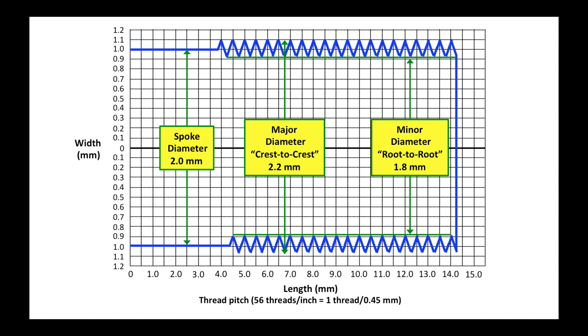The bottom axis, or the x-axis, is length in millimeters, and we can see that the thread pitch is 56 threads per inch, which is about one thread per 0.45 millimeters.